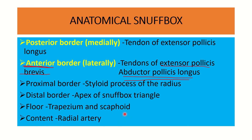The content of the anatomical snuffbox is the radial artery. These points are very important for the anatomical snuffbox, and this information is enough to answer all questions about the anatomical snuffbox in any type of exam, including the FRCS and others.